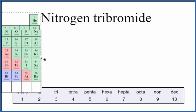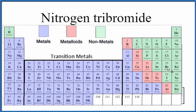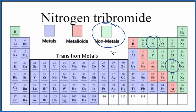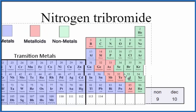So if we look at the periodic table here, we can see nitrogen right here and then bromine. They're both nonmetals. So since we have two nonmetals, this is a molecular compound, and we don't really need to worry about ionic charge.